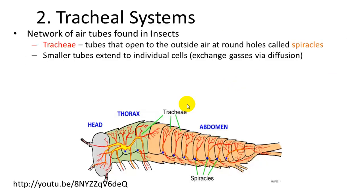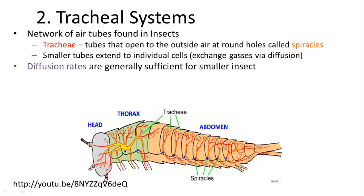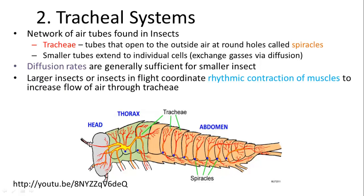Tracheal systems are networks of air tubes found in insects. The trachea are large tubes connecting to holes called spiracles. They divide further and further until they exchange directly with tissues, generally sufficient for diffusion rates. Larger insects that need more gas exchange will ventilate by contracting their muscles, especially during flight when they need more oxygen.